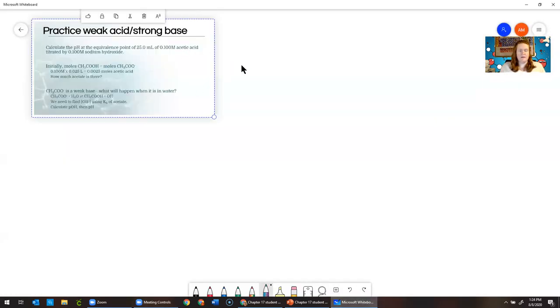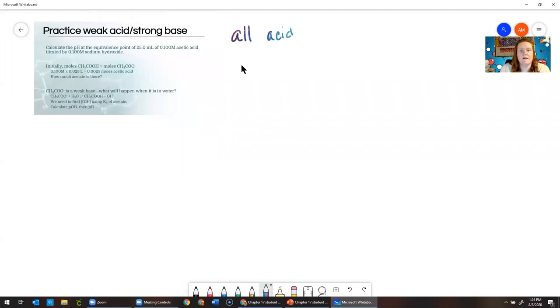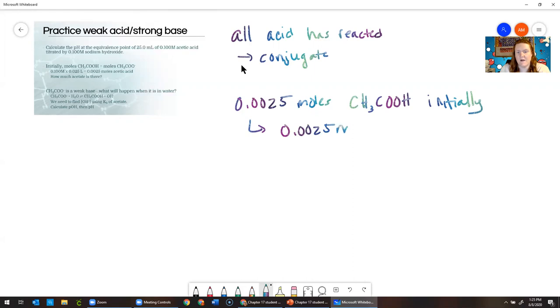I've copied it into this whiteboard. When we're at the equivalence point of a weak acid strong base titration, the important thing to understand is that all of the acid is reacted, so the only thing that's there is the conjugate. You have an equal number of moles to what you start with with the acid.